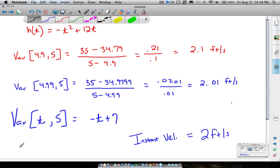Maybe I should write that down up here. I just found an average velocity from 4 point, 9, 9, 9, 9, virtually 5 seconds, up to 5 seconds. The average velocity is 2 point, 0, 0, 0, 1. That number is just getting smaller, but it's a limit.